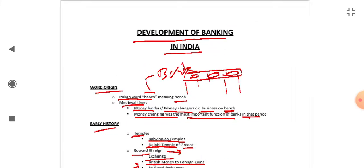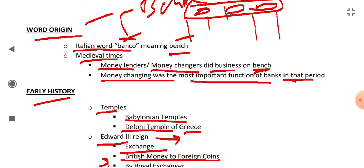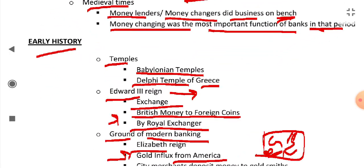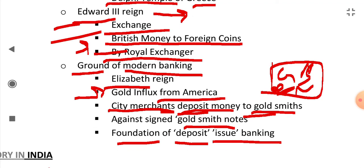Now a quick revision. Development of Banking in India. The word Bank came from the Italian word 'Banco' meaning bench, because in medieval times money lenders and money changers did their business on benches. For early history, temples were the main centers of banking, like Babylonian temples and the Delphi temple of Greece. During the reign of Edward III, money exchange was taken over by the king through a royal exchanger. The ground of modern banking was laid during the reign of Elizabeth, when there was a large influx of gold from America. City merchants started depositing their money with goldsmiths, who in return issued goldsmith notes — this led to the foundation of deposit and issue banking.